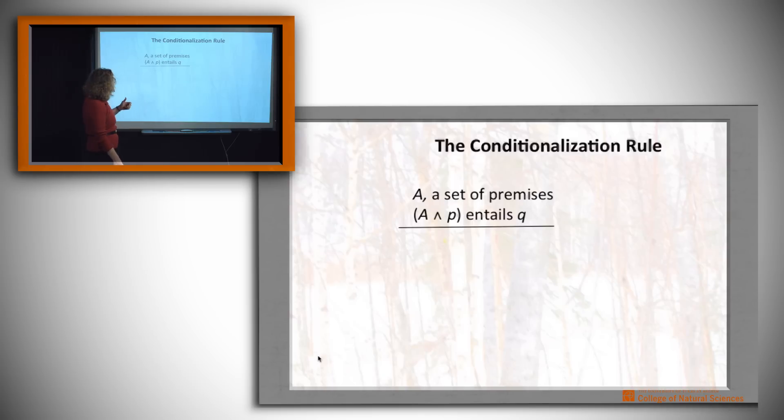It's a little different from the other rules. It says that if we start with a set of premises, call it A, and we add something else, some additional assumption, call it P, and those two together entail some conclusion Q,